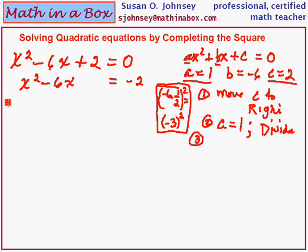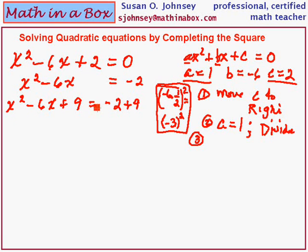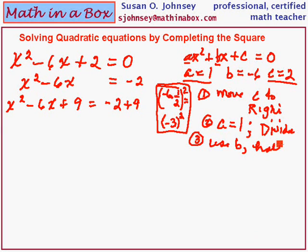So what we do with that result is add 9 to each side of our equation. Equations have to stay balanced — whatever we add on the left, we add the same amount on the right. So step 3 was to use b, take half of it, square it, and then add that value to both sides.